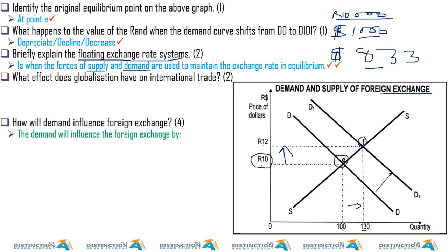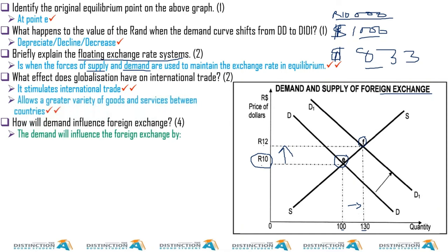Globalization is when countries trade with one another, and it stimulates international trade. It allows a greater variety of goods and services between countries, because you have the ability to buy what you like or can afford from other countries. That is what globalization enables currently.